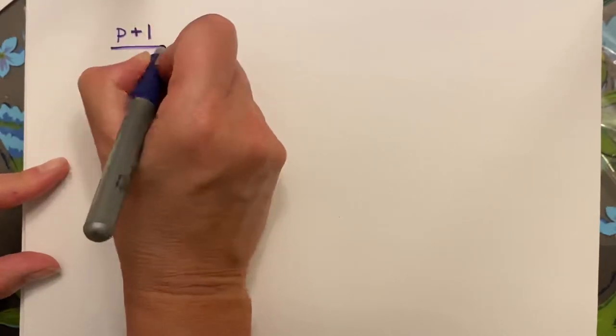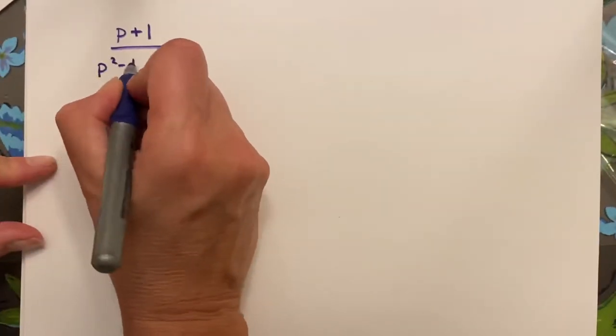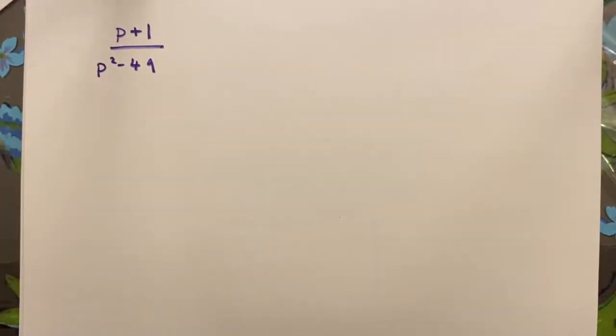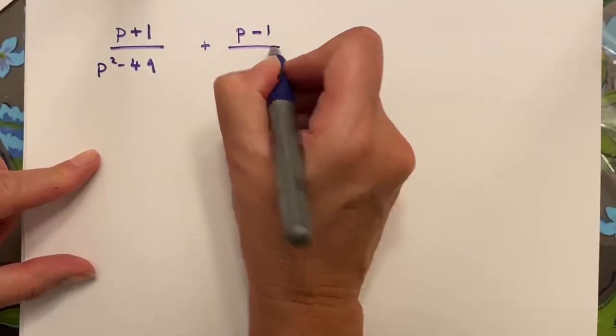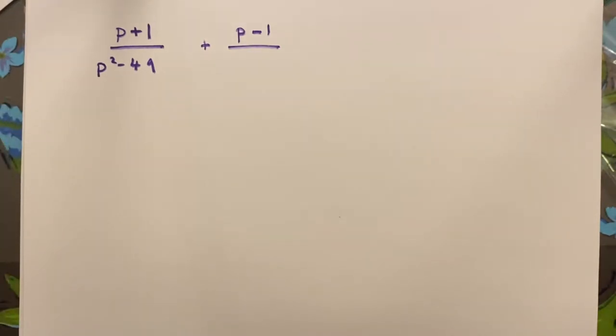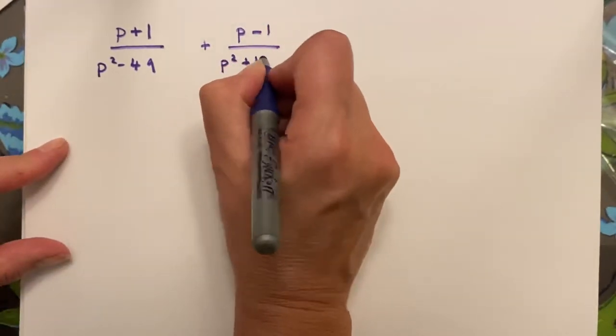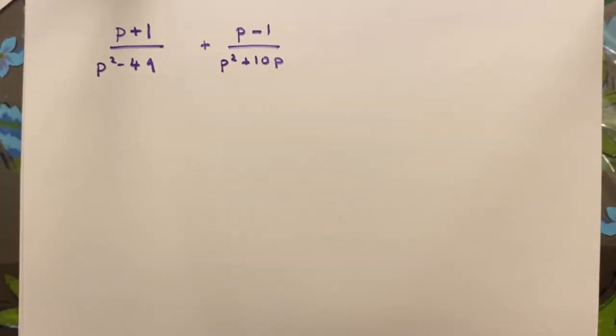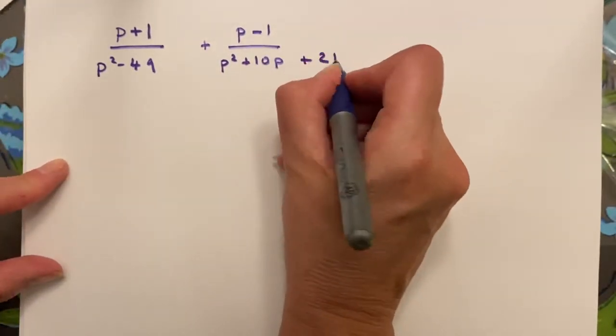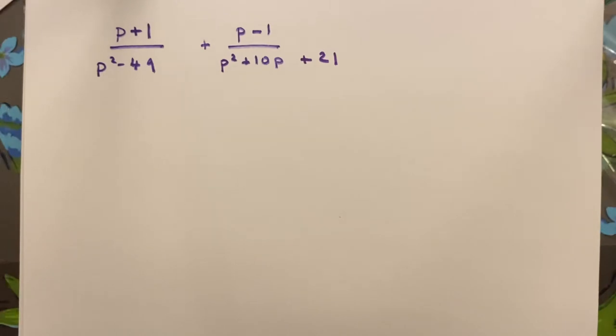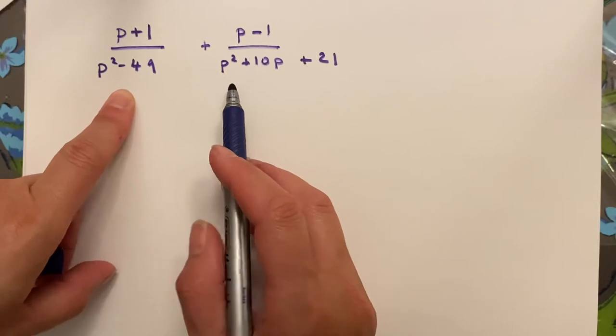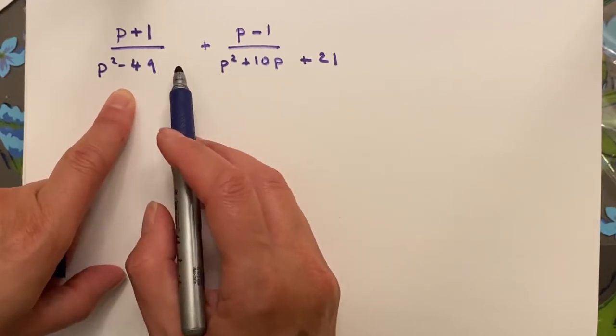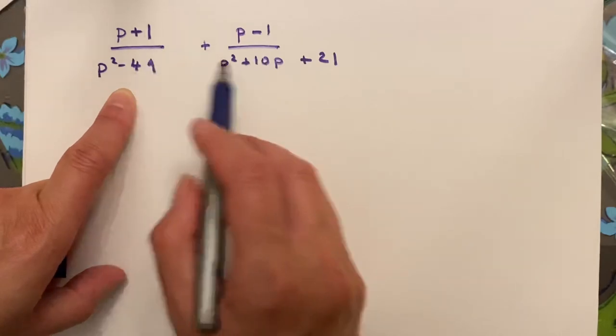p plus 1 over p squared minus 49, and I'm going to add p minus 1 over p squared plus 10p plus 21. Now, clearly, I do not have common denominators or anything close to it. And the only way I can even find them is by factoring what's there to try to get a sense for what needs to be added to the common denominators.